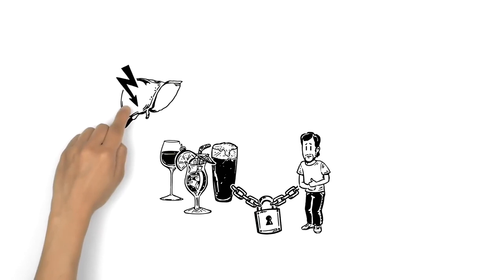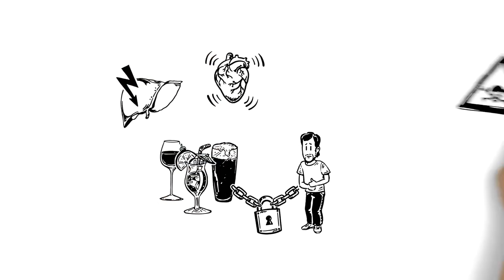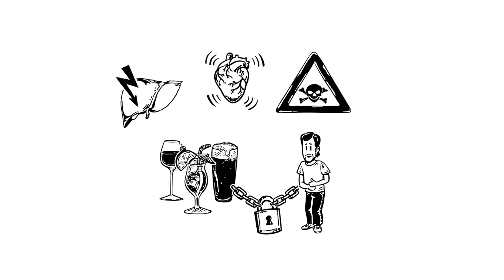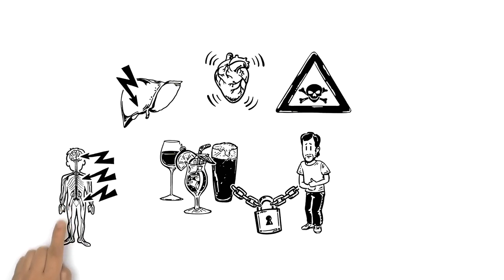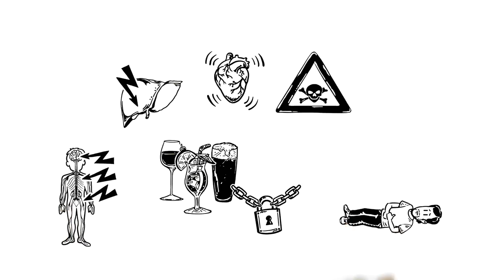Long term problems can include addiction, liver disease, high blood pressure and cancer. Alcohol's effect upon the central nervous system can lead to coma and even death.